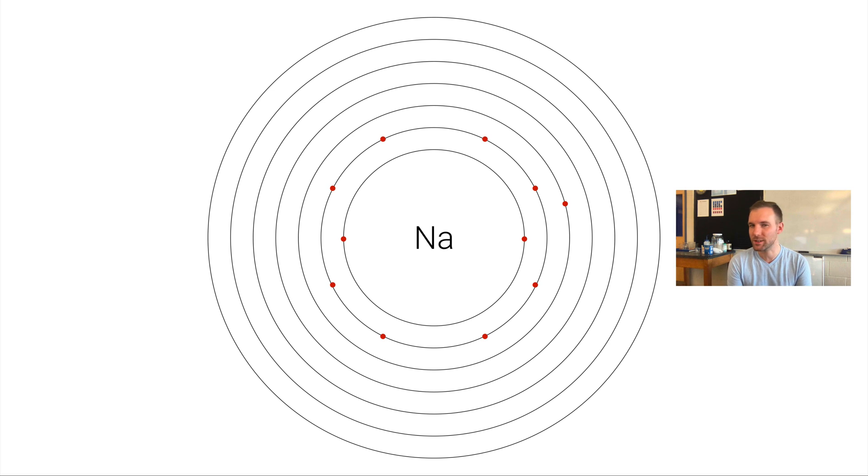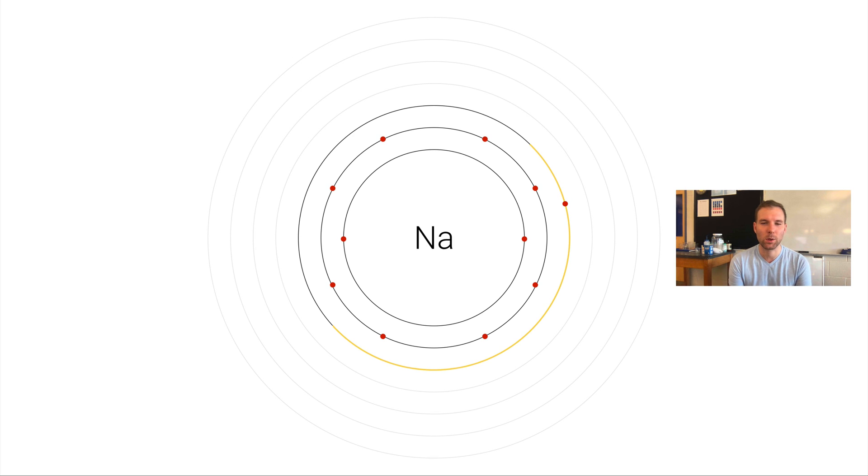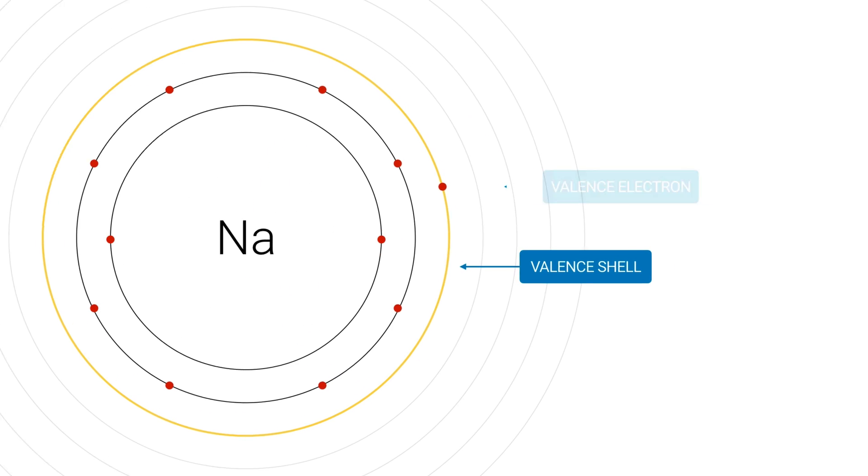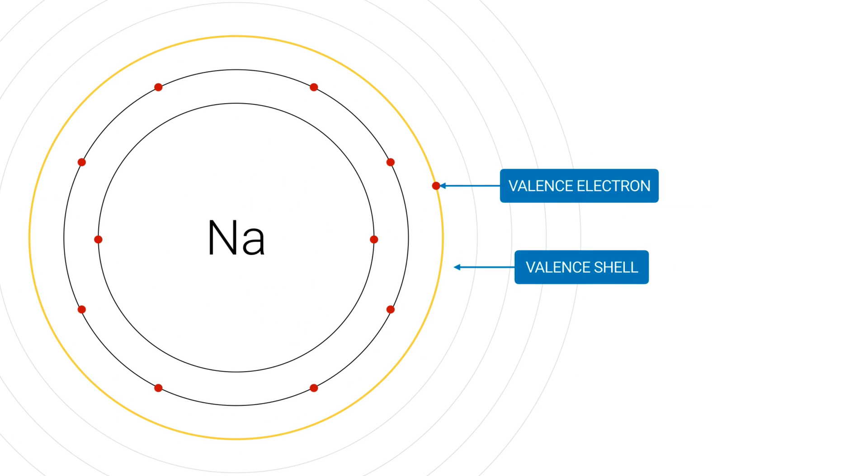There are four of these seven shells that don't have any electrons in them at all, but the outermost shell that has any electrons—this third shell here with one electron—is what we call the valence shell. An electron in the valence shell is simply called a valence electron.